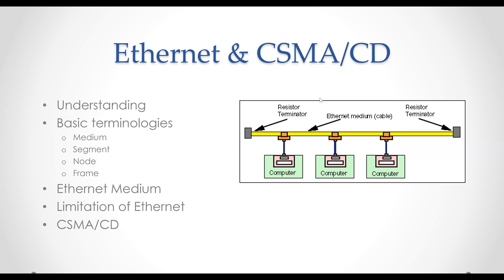First one is medium. Ethernet devices attach to a common medium that provides a path along which the electronic signals will travel. It's like the cabling between a network. Historically this medium has been coaxial copper cable, but today it is more commonly twisted pair or fiber optic cable.